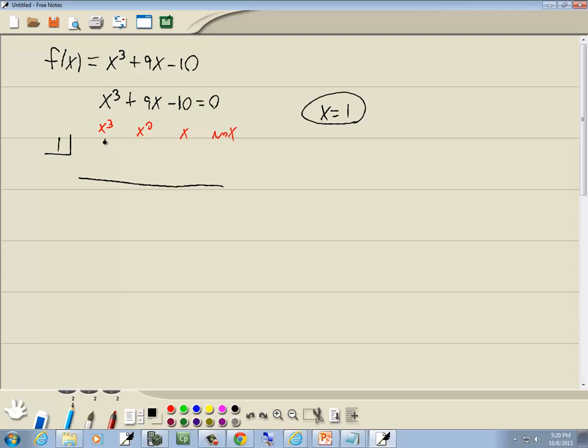Well, our number in front of our x to the third is 1. There is no x squared, so that's a 0. The number in front of our x is a 9. And our no x, or constant term, is negative 10.